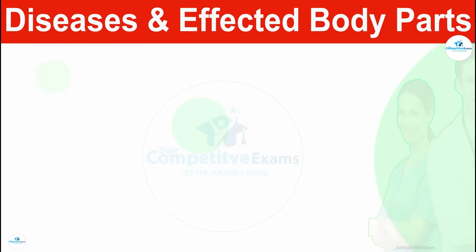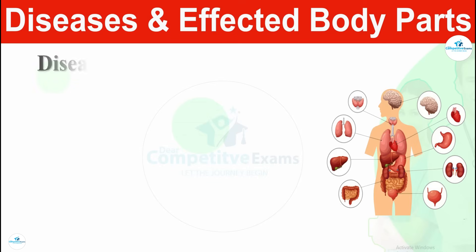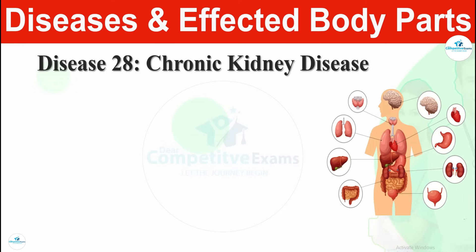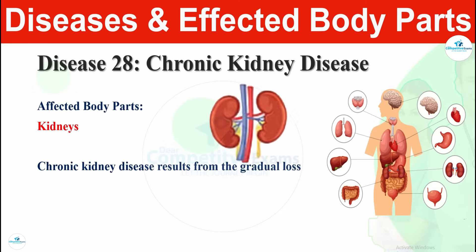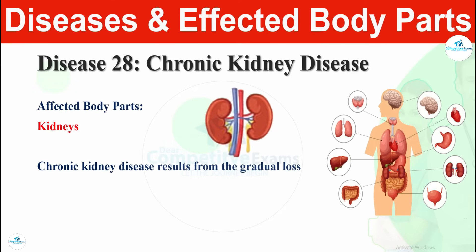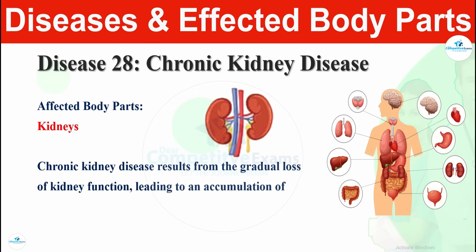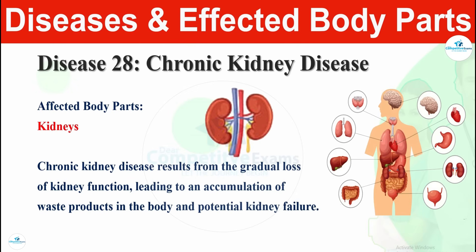Disease number twenty-eight is chronic kidney disease. Chronic kidney disease affects the kidneys. It results from the gradual loss of kidney function, leading to an accumulation of waste products in the body and potential kidney failure. This disease affects the kidneys and can even lead to kidney failure if not treated on time.